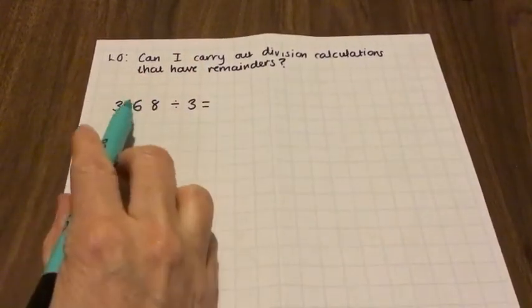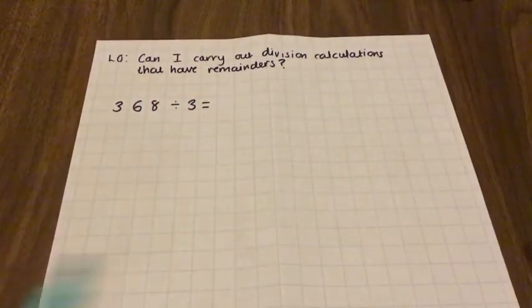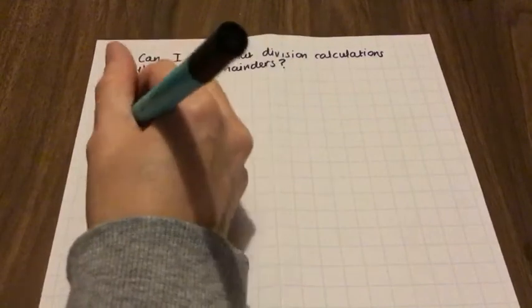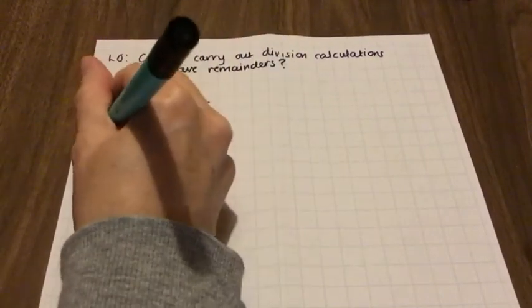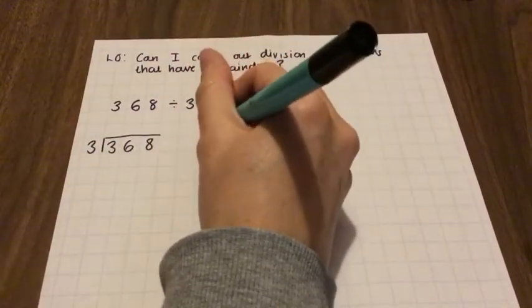So in this calculation, we've got 368 divided by 3. We're going to do what we did before, and we're going to put that into a bus stop like so. We're going to put our 3 times table down the side to help us out.